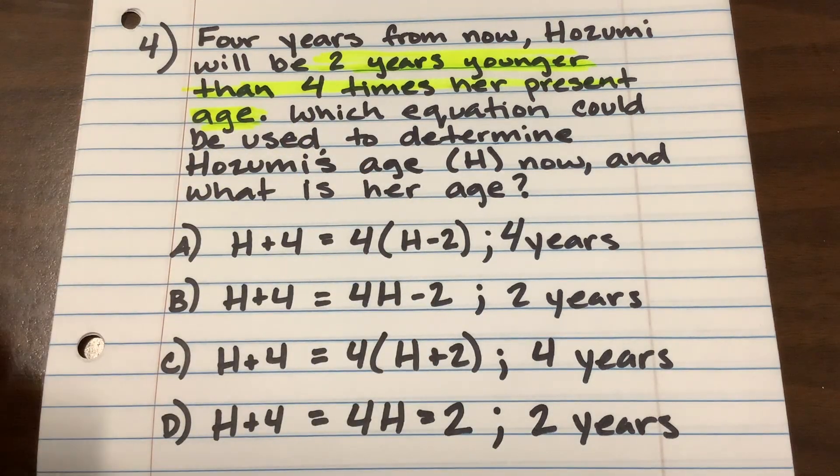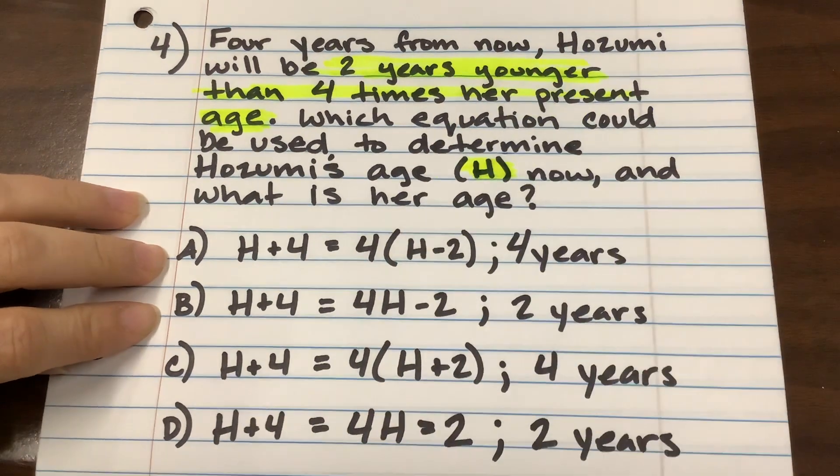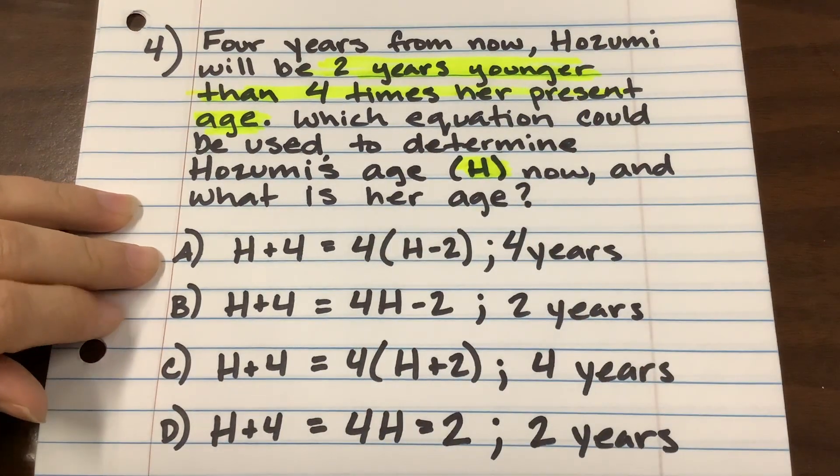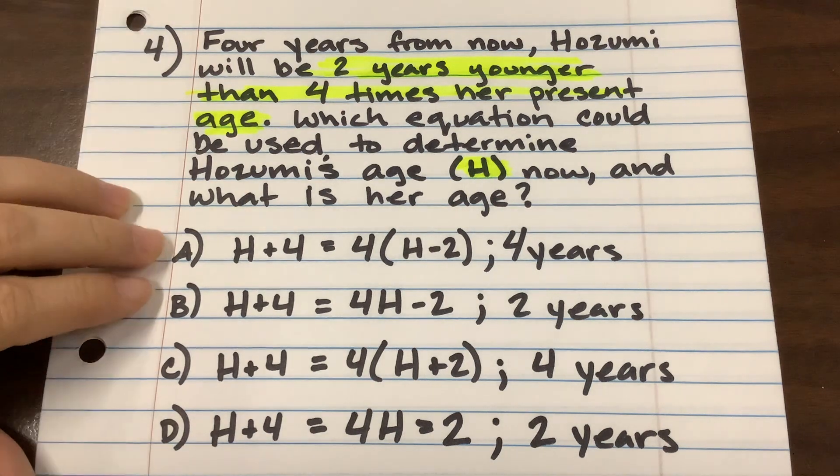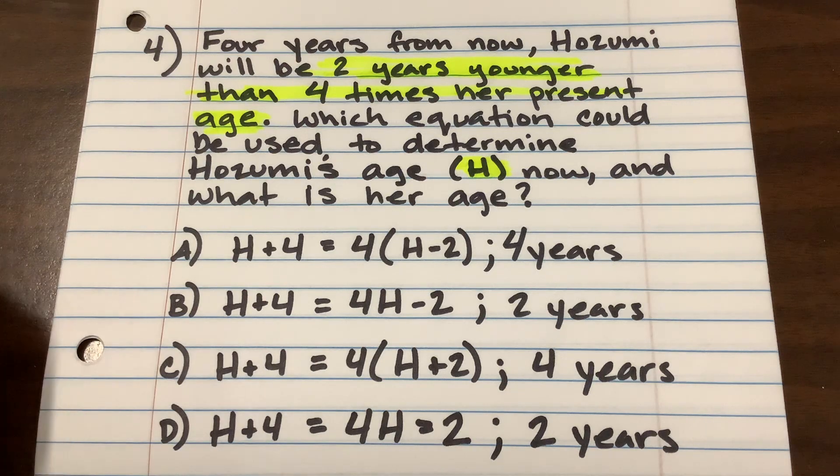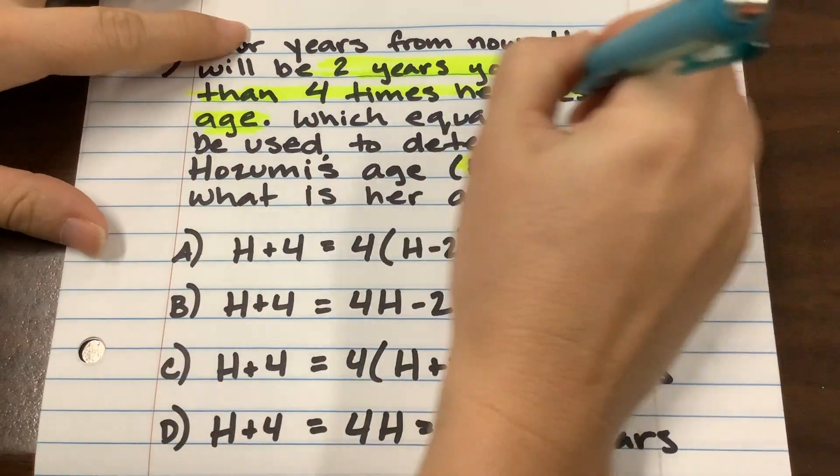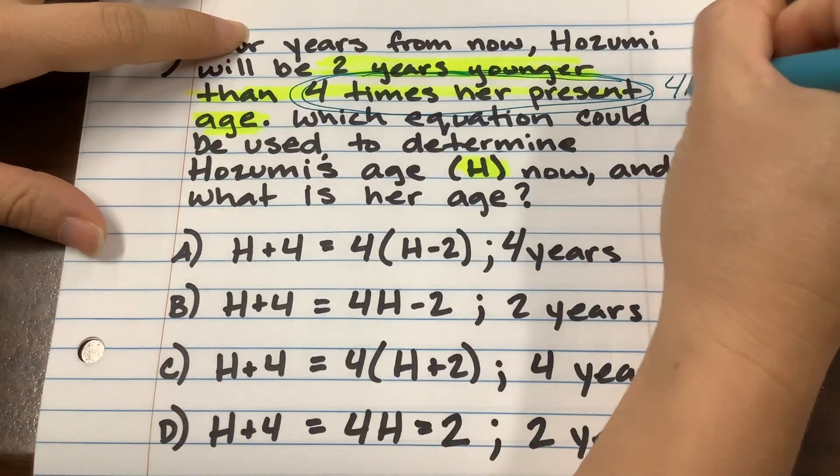Which equation could be used to determine Hozumi's age represented by H now and what is her age? So if she's two years younger than four times her present age, then that means that we're taking her age times four here. That's what this is saying. So four times her age.